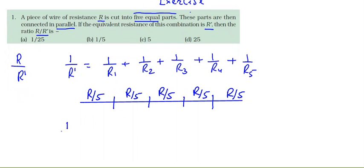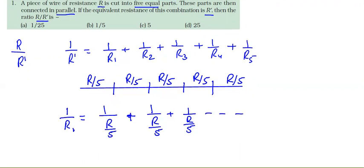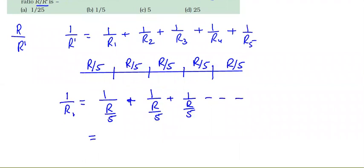Substituting these values: 1/R' = 1/(R/5) + 1/(R/5) + 1/(R/5) + 1/(R/5) + 1/(R/5). Each term inverts to 5/R, so we get 1/R' = 5/R + 5/R + 5/R + 5/R + 5/R.